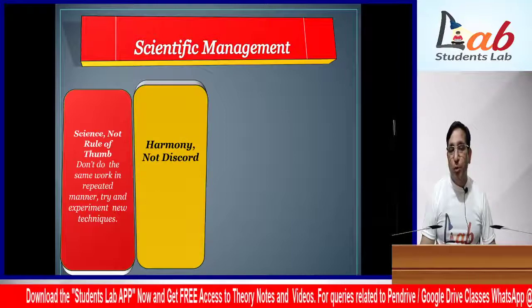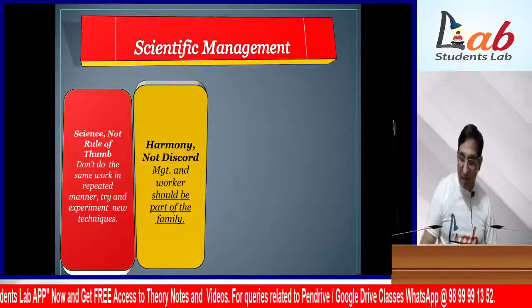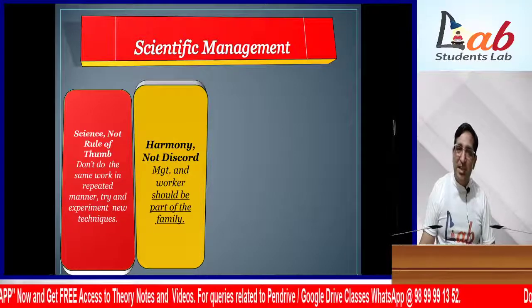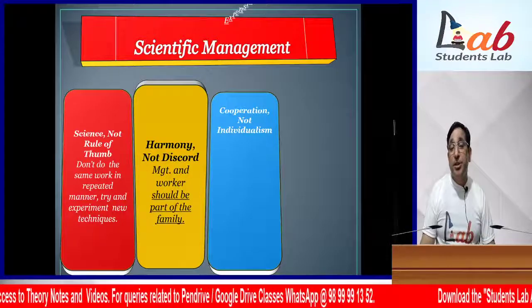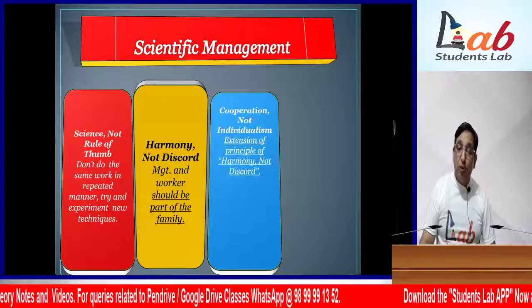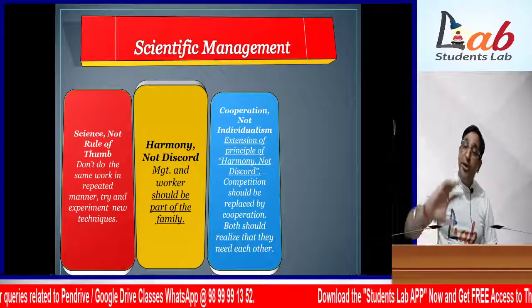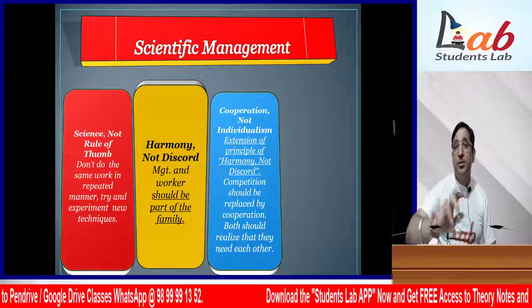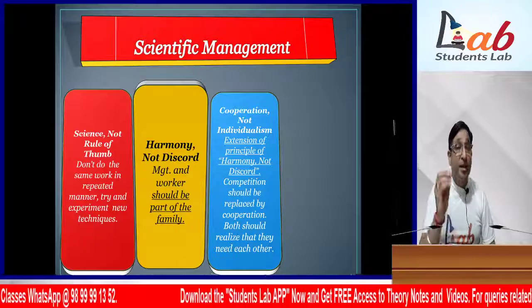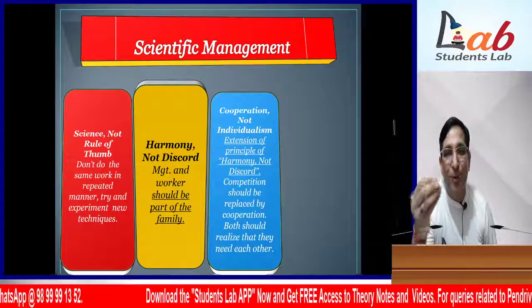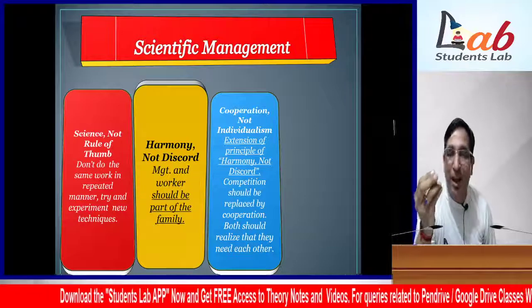The second principle Taylor gave was Harmony, Not Discord - meaning management and workers should work like one family. Obviously if they work like a family, everyone will grow together. The next principle, Cooperation Not Individualism, is considered an extension of Harmony Not Discord. It says competition should be replaced by cooperation. Both should realize that they need each other - management and staff both need each other. This is called Harmony, Not Discord.